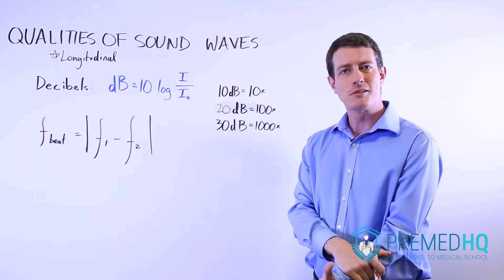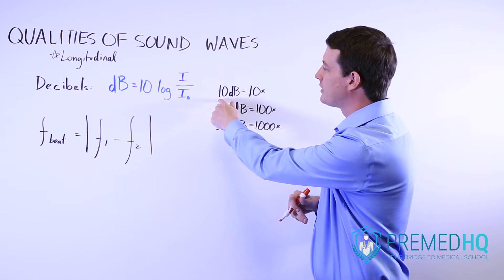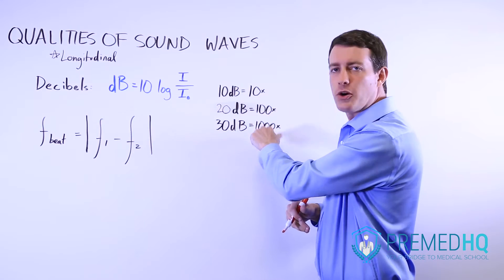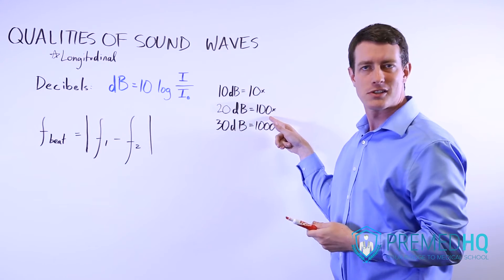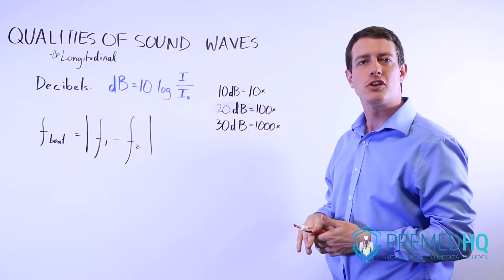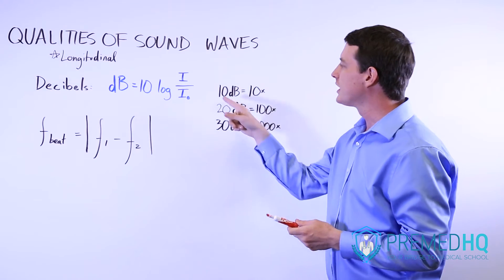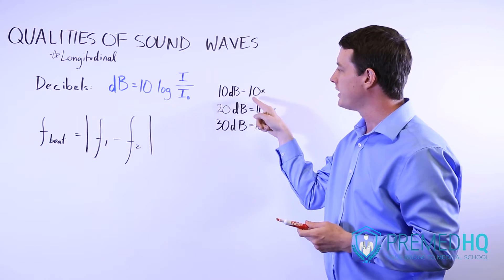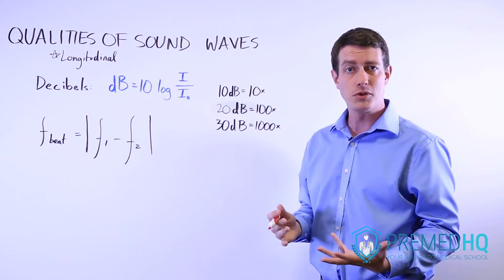The best way to think of this, and this is something that a student taught me, is that if you look at this first number, that tells you how many zeros are going to be following that one. So if it's 20 decibels, you have two zeros. If it's 30 decibels, you have three zeros. And so if you're trying to figure out what a difference of some number of decibels means, just look at that first number and realize that that's how many zeros follow the one when you're examining decibels.